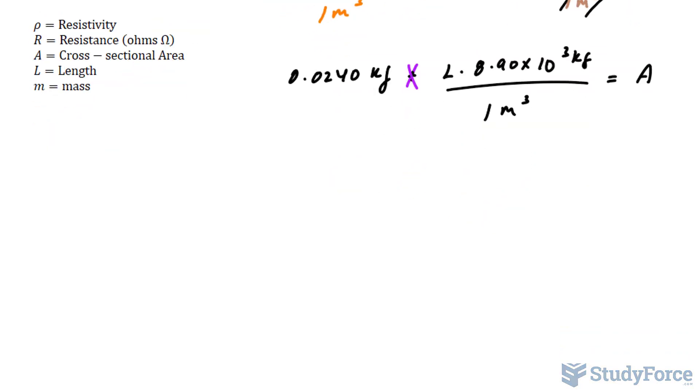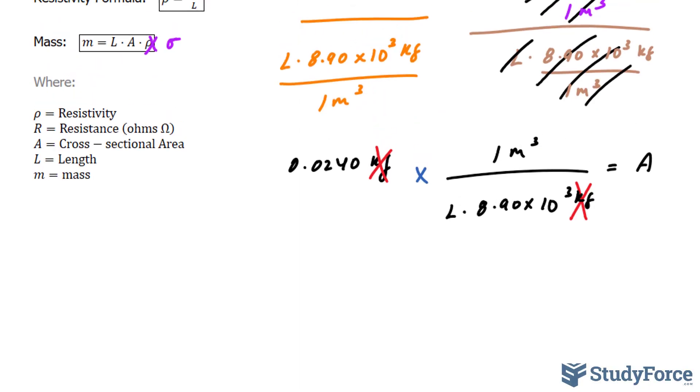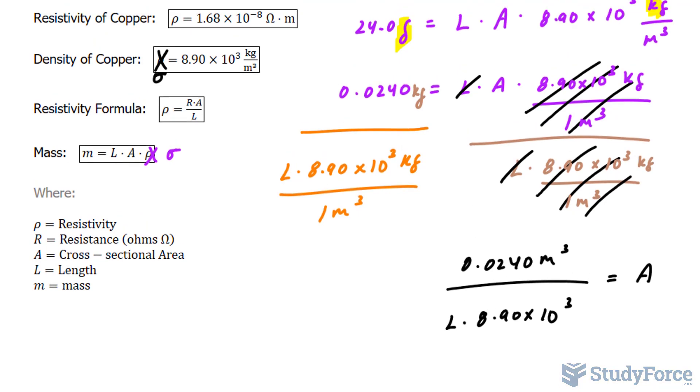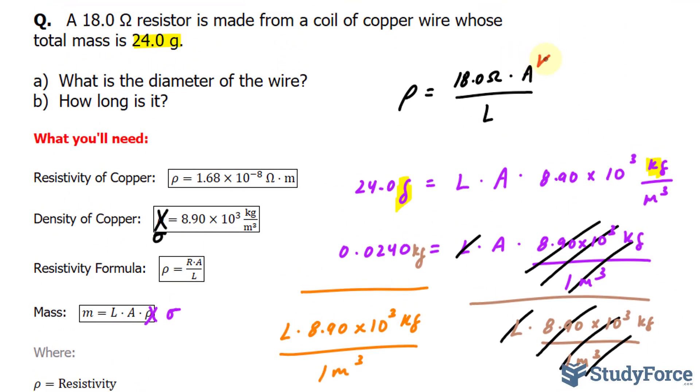Your expression should look like this. Now as you see, the kilogram unit will cancel out, leaving us with 0.0240 meters cubed per L times that number. Let me clean that up a little more. So I'll take this expression for A and substitute it right into there. Let me rewrite this at the bottom.